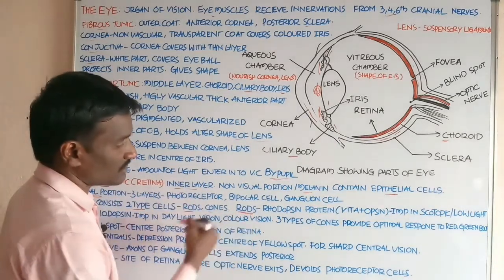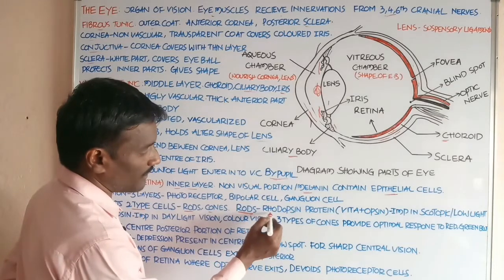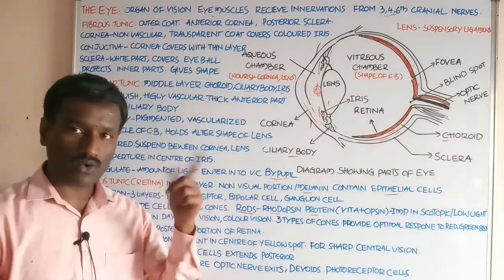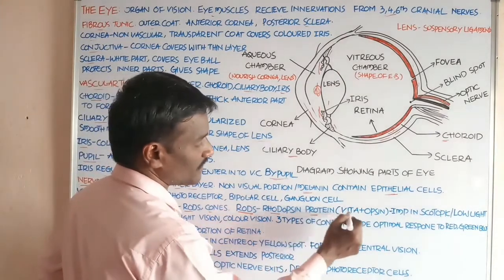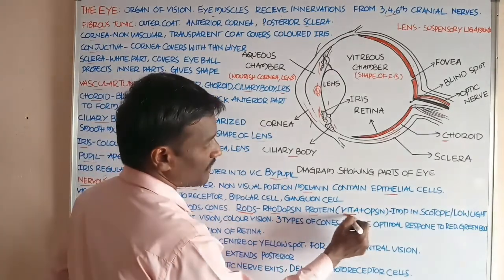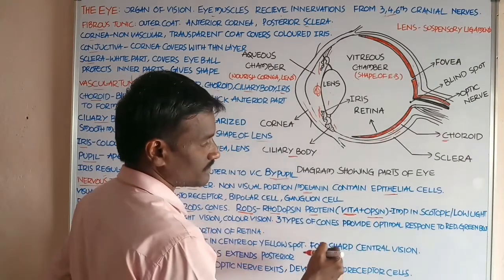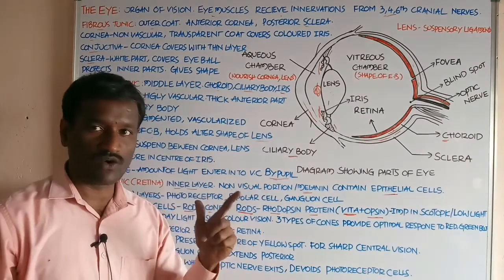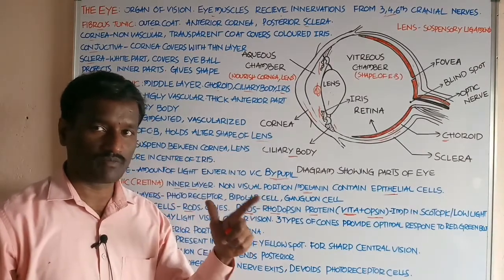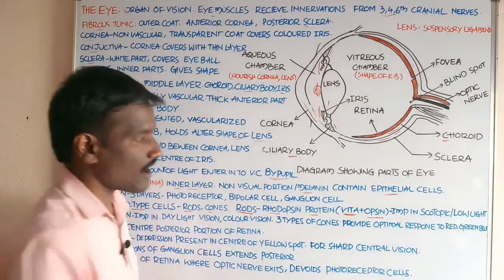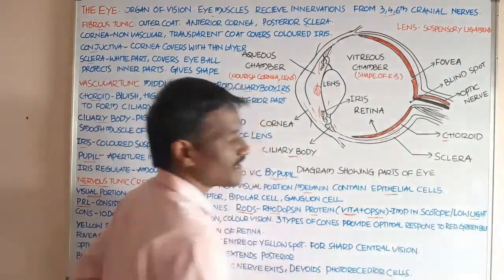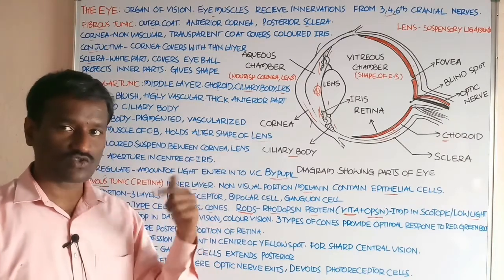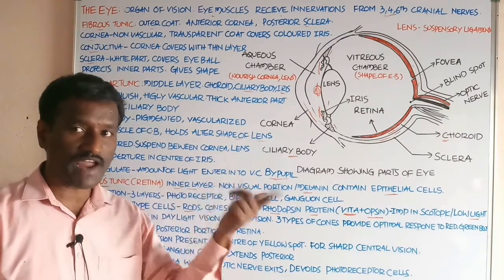Rods contain rhodopsin protein. Rhodopsin is a protein formed by the combination of vitamin A and opsin. It plays a main role in scotopic vision, also called dim light or low light vision.